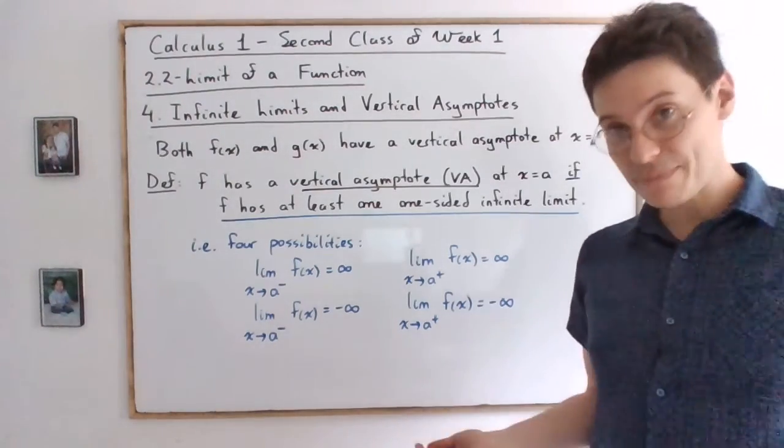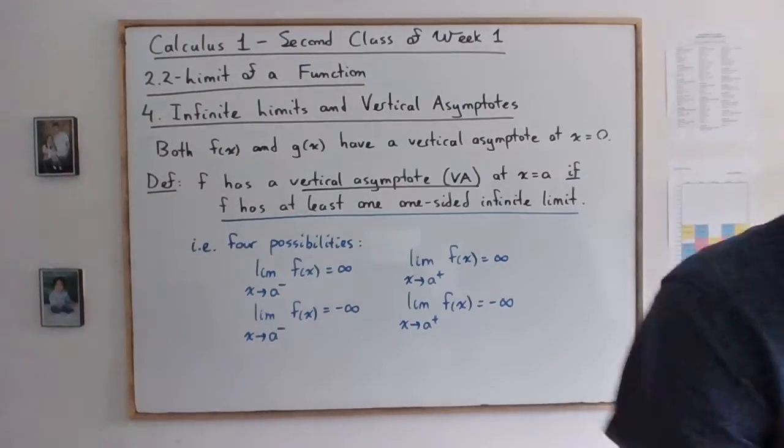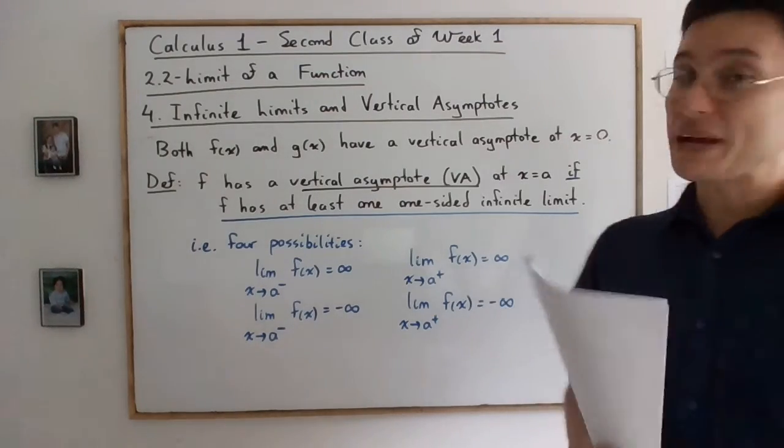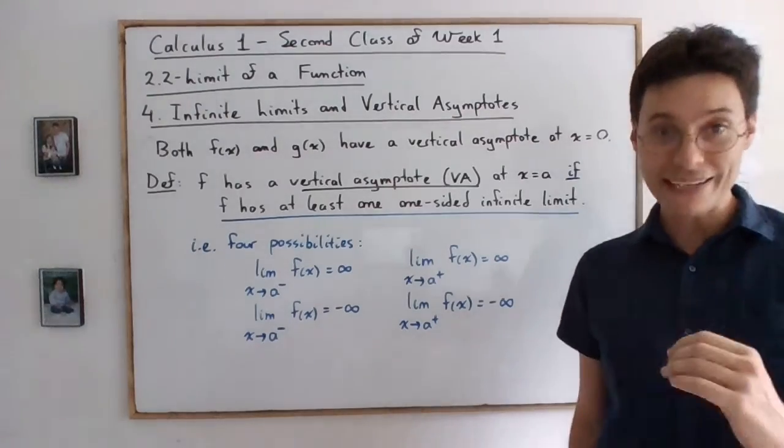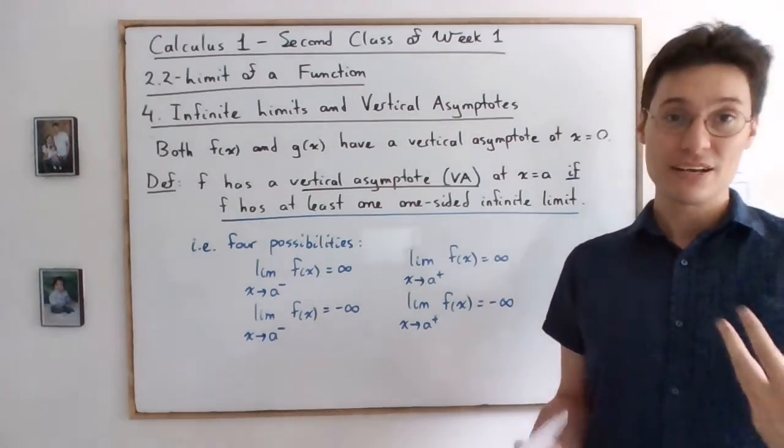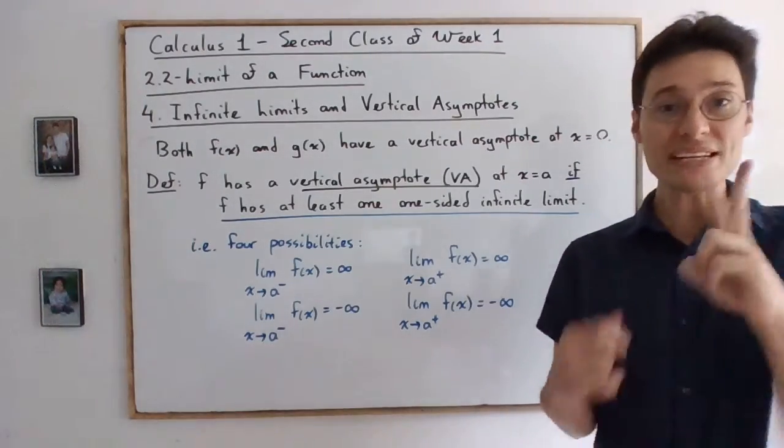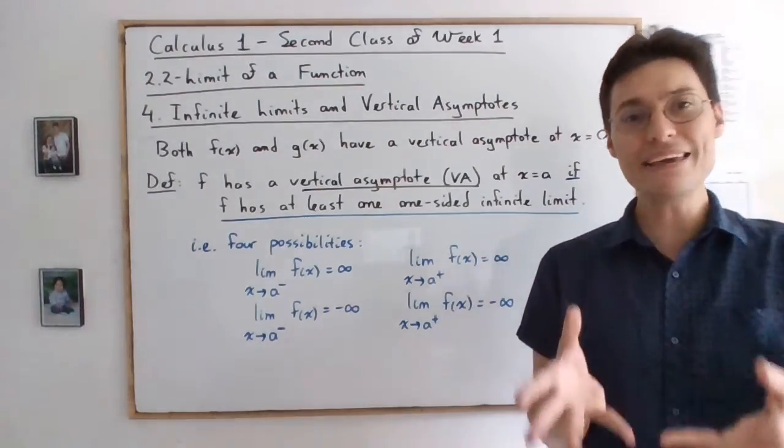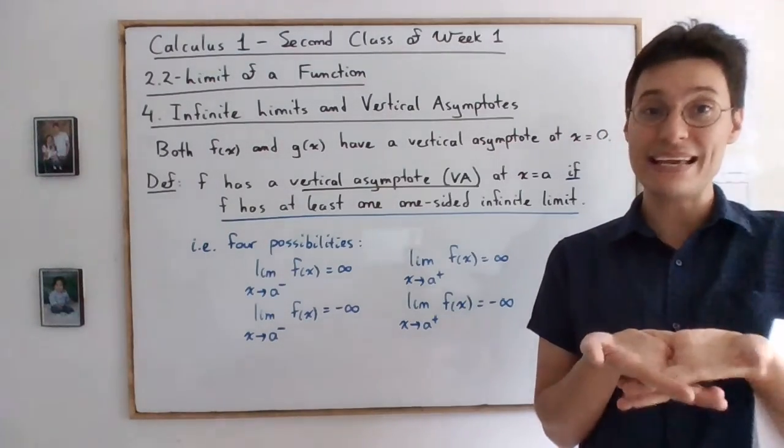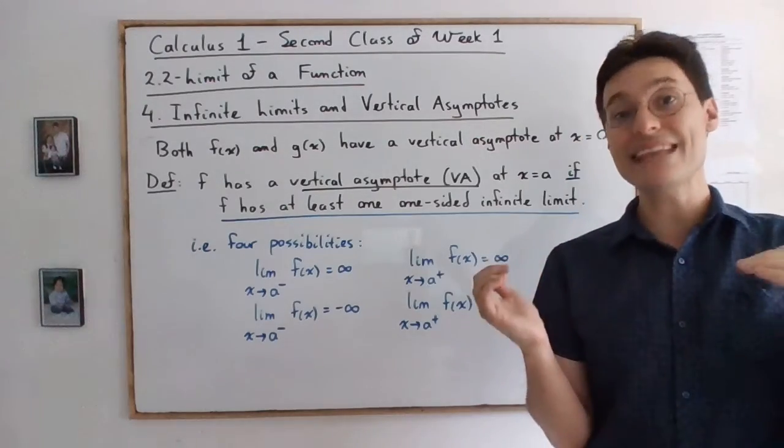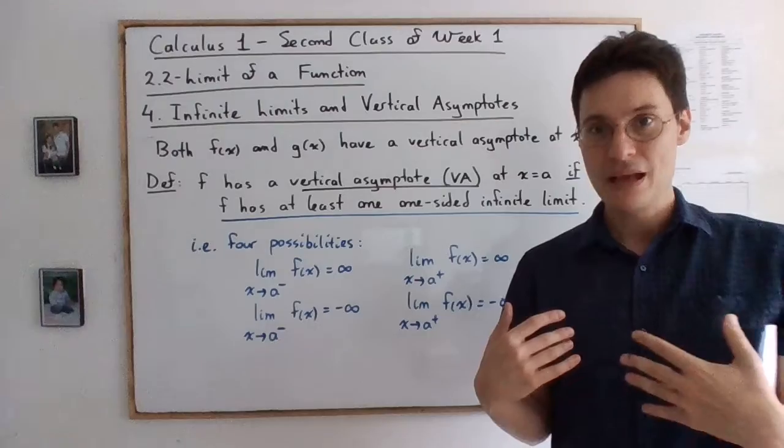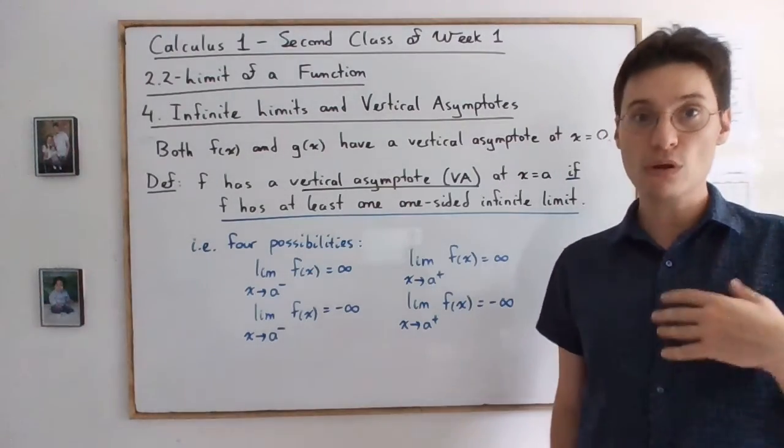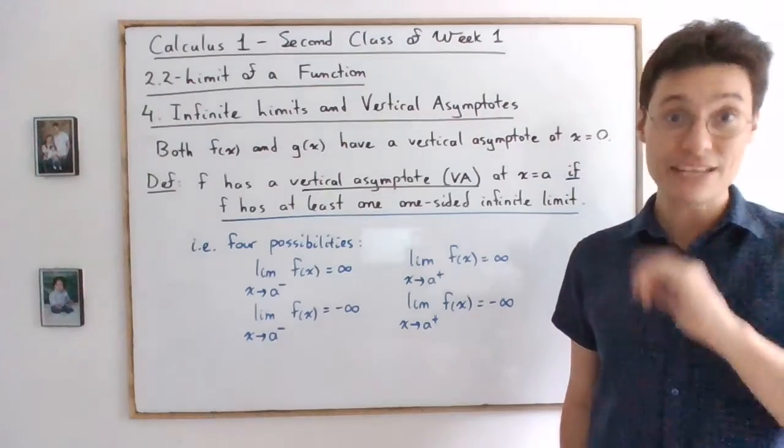Or the limit as x is approaching a from above of f(x) is equal to negative infinity. So these are the four possibilities. In the next video we will see how to find vertical asymptotes and how to take the limits. So when we have an asymptote, two things could happen: either the one-sided limits match or they don't. If they match then the limit is either infinity if they both blow up or is negative infinity if they both sink down. However, the limit will fail to exist if these two limits, even if they're infinite, will not match. So we will learn how to compute that algebraically. See you in that video.